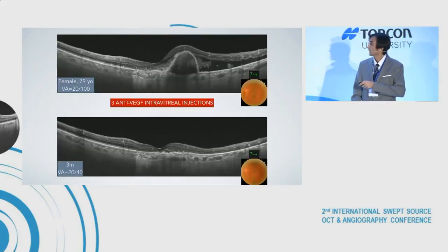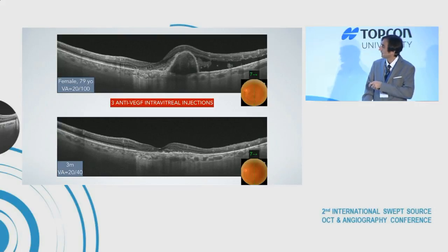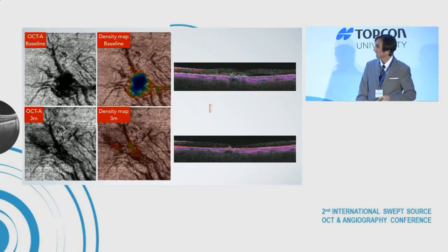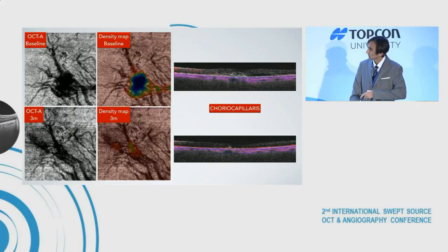This was a polypoidal lesion treated with three injections: no macular fluid, resolution of the pigment epithelial detachment. In the choriocapillaris layer, we could detect the polyps with a clear regression after this treatment.